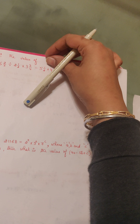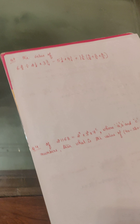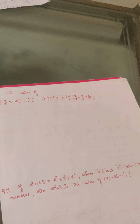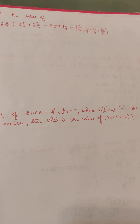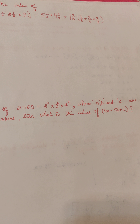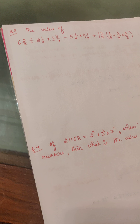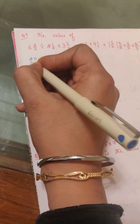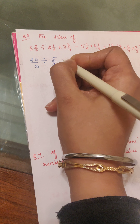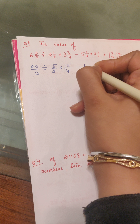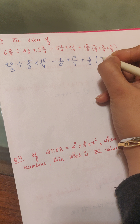The third question: find the value of 6 and 2/3 divided by 2 and 1/2, into 3 and 3/4, minus 5 and 1/2 into 4 and 1/4, plus 1 and 2/3 — and in the bracket it is 7/8 plus 3/4 into 2/3. Again BODMAS applies, but since numbers are in mixed fraction form, you need to convert them to improper fractions first. So 6 and 2/3 becomes 20/3, 2 and 1/2 becomes 5/2, 3 and 3/4 becomes 15/4, 5 and 1/2 becomes 11/2, 4 and 1/4 becomes 17/4, and 1 and 2/3 becomes 5/3.